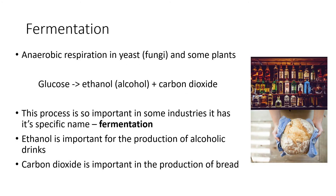Fermentation is the name given to a particular type of anaerobic respiration that occurs in particular organisms. Fermentation is when glucose is turned into ethanol, which is an alcohol, and carbon dioxide. There are several industries that make use of this process. The ethanol produced is used in the production of alcoholic drinks, and the carbon dioxide is important in the production of bread products.